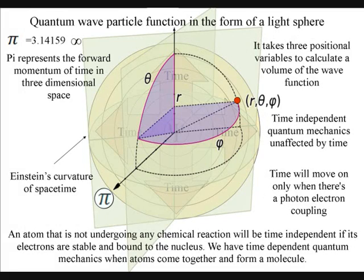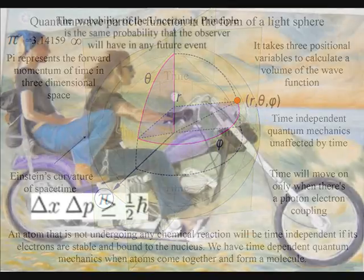The probability of the uncertainty principle is the same probability that the observer will have with any future event.